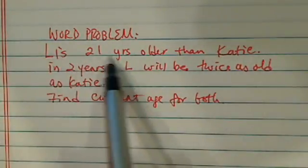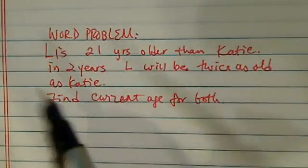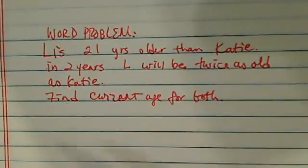It says L is 21 years older than Kitty and in two years, L will be twice as old as Kitty. We were asked to find the current age for both.